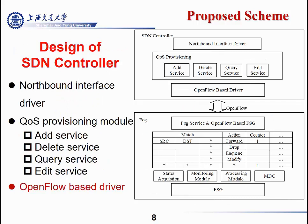I will now introduce more details about the SDN control and fog. The SDN control has three parts: the northbound interface driver, used for communication between the application layer and the SDN control; the OpenFlow-based driver, used to communicate between SDN control and fog; and most importantly, the QoS provision model. The QoS provision model provides full service, best-effort service, delayed service, query service, and emergency service, so we can match all QoS provisions in this database.